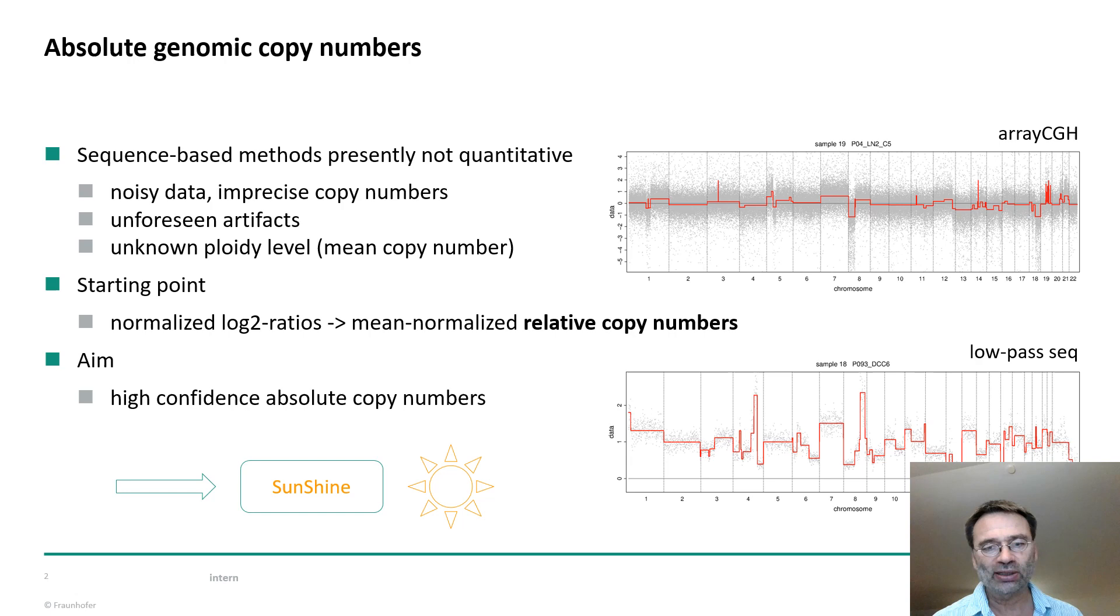Because the data, as you see in arrayCGH, are log2-ratios normalized to zero, as well as low-pass sequencing, which are normalized to a mean of one. So these are then relative copy numbers, as you see here, and these need to be transformed to absolute copy numbers, these integer copy numbers between zero and some high value depending on how much the genome is amplified.